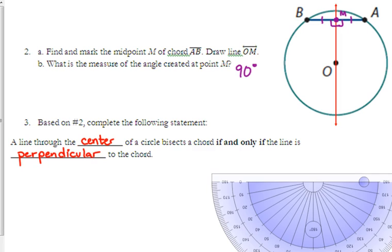So anytime you have a chord and you draw a line through the center of the circle and you know that it creates a right angle, then you know that chord's been bisected, or vice versa. If you know the chord's been bisected, then you know a right angle has been formed.